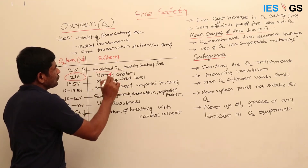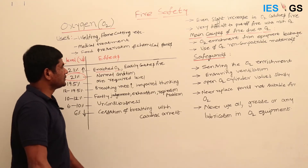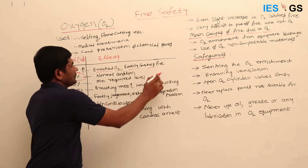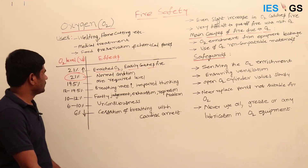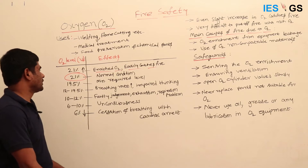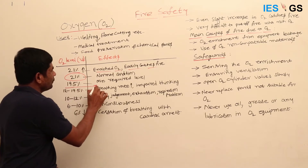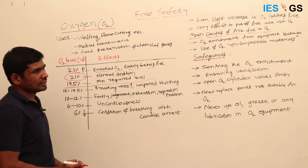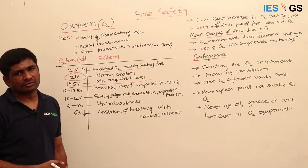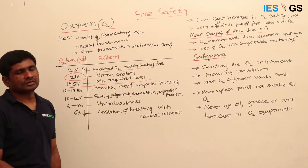If oxygen becomes more than 21%, it is called oxygen enrichment. Whenever there is oxygen enrichment, it easily catches fire. When it is at 21%, that is the normal condition. The minimum requirement level to work safely in any environment is 19.5%.